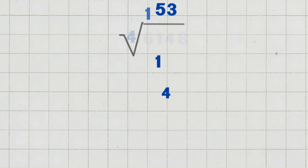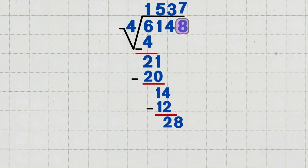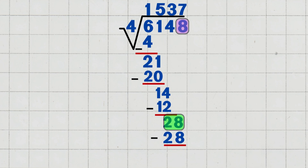Step five: bring down the last digit, eight. Bring down the eight, making the new number twenty-eight. Twenty-eight divided by four equals seven, since four goes into twenty-eight exactly seven times. Write seven in the quotient above the eight. Multiply seven times four, which equals twenty-eight. Subtract twenty-eight minus twenty-eight, which equals zero.